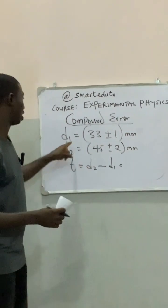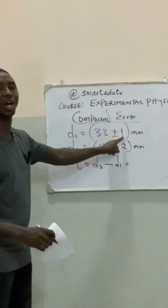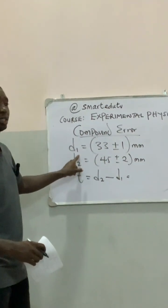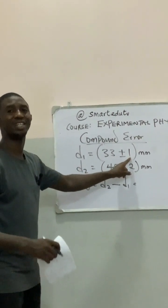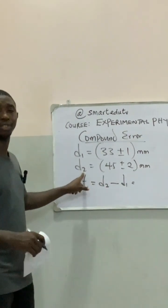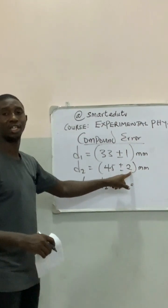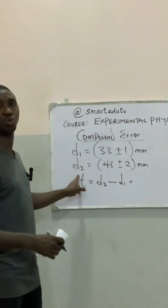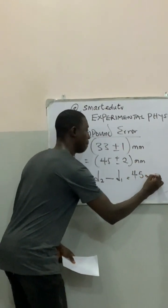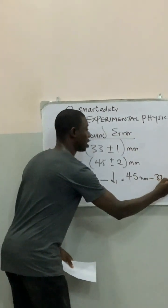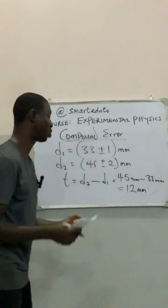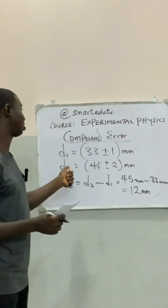Each term has its own meaning. For D1, the value 33 mm is the actual diameter, while ±1 mm is the error associated with it. For D2, 45 mm is the actual value and ±2 mm is the associated error. The actual thickness is therefore 45 minus 33, which gives us 12 millimeters.